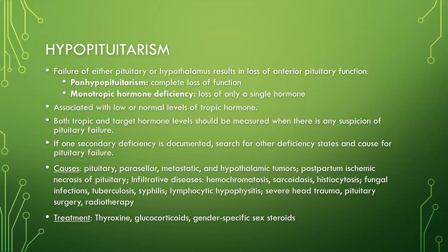Specifically, loss of ACTH (adrenocorticotropic hormone) and ADH (antidiuretic hormone). Treatment is usually replacement of the hormones not being produced — for example, glucocorticoids or gender-specific sex steroids. That concludes this unit.